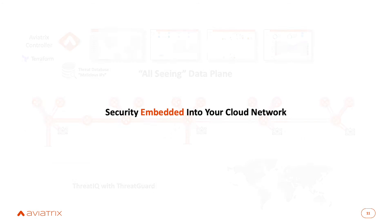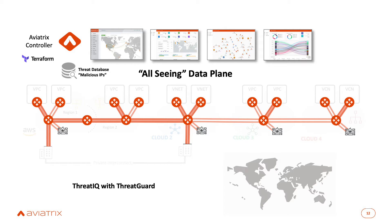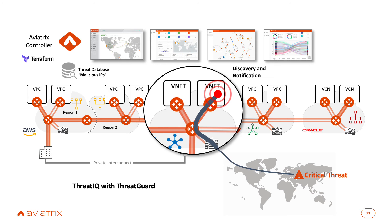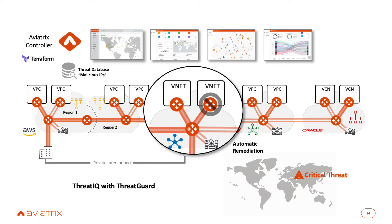Let's talk about security that's embedded into the cloud network, because this is something a lot of customers find very interesting. As Aviatrix becomes the data plane across your single cloud or multiple clouds, it sees all of the traffic. An example is a feature we released called ThreatIQ with ThreatGuard, which takes the source and destination address of every flow and compares them to a threat database of malicious IPs. I can immediately see that in a VNet something is talking to a known malicious IP, and because I control the data plane, I can put a blocking rule in to stop that communication.